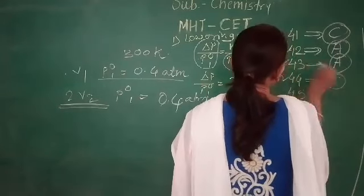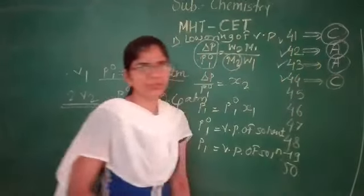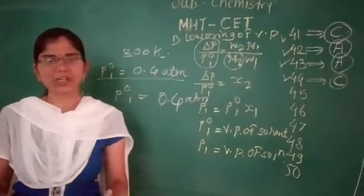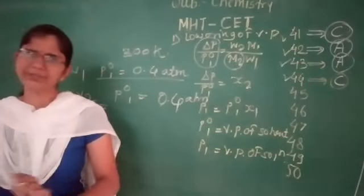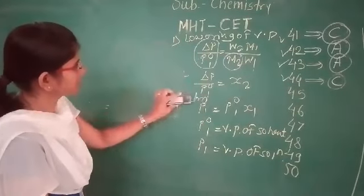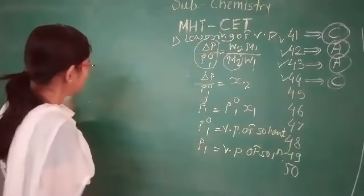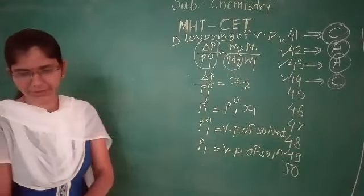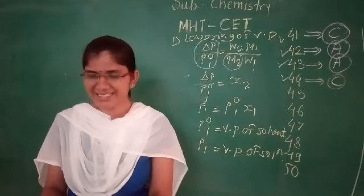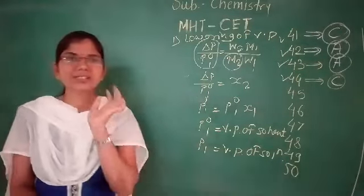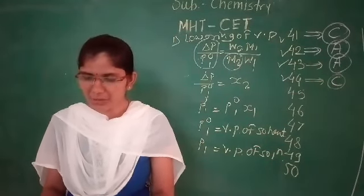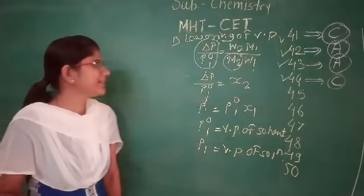The correct option for question 44 is option C — the vapor pressure remains 0.4 atmosphere because vapor pressure does not depend on volume; doubling the volume does not change it. Question 45: For a dilute solution, Raoult's law states that the lowering of vapor pressure is equal to the mole fraction of the solute.